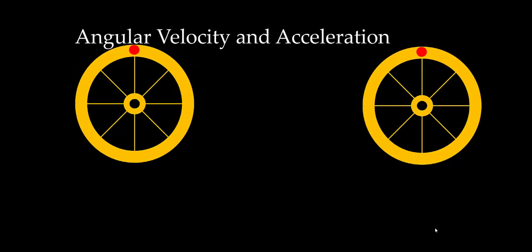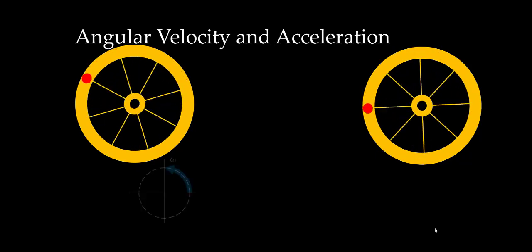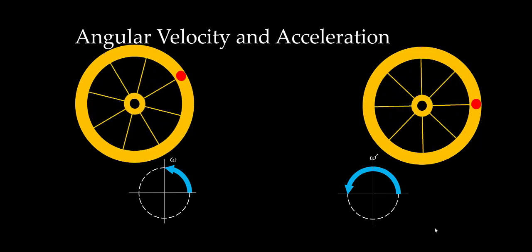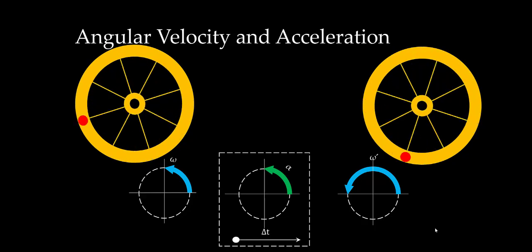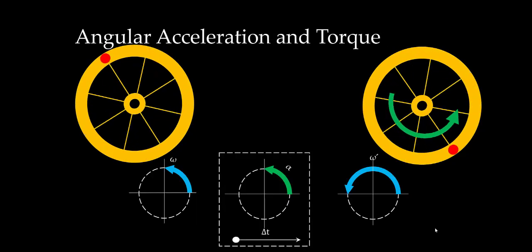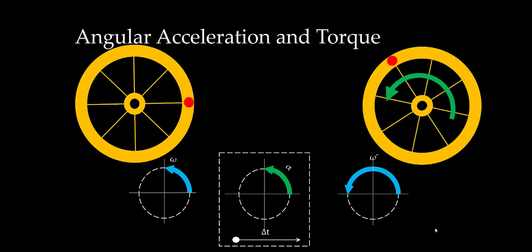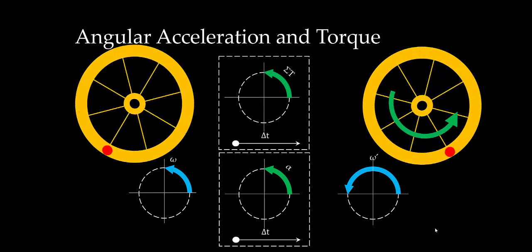Let's use wheels to illustrate the concepts of angular motion. In this scenario, the wheel is moving with a certain angular velocity in the clockwise direction. At a later moment, the wheel has a larger angular velocity. To get a larger velocity, there has to be an angular acceleration in the direction of the velocity. Something caused the wheel to speed up—that is an angular acceleration in the direction of the angular velocity. And that angular acceleration is caused by an effective torque, which is in the direction of the angular acceleration.